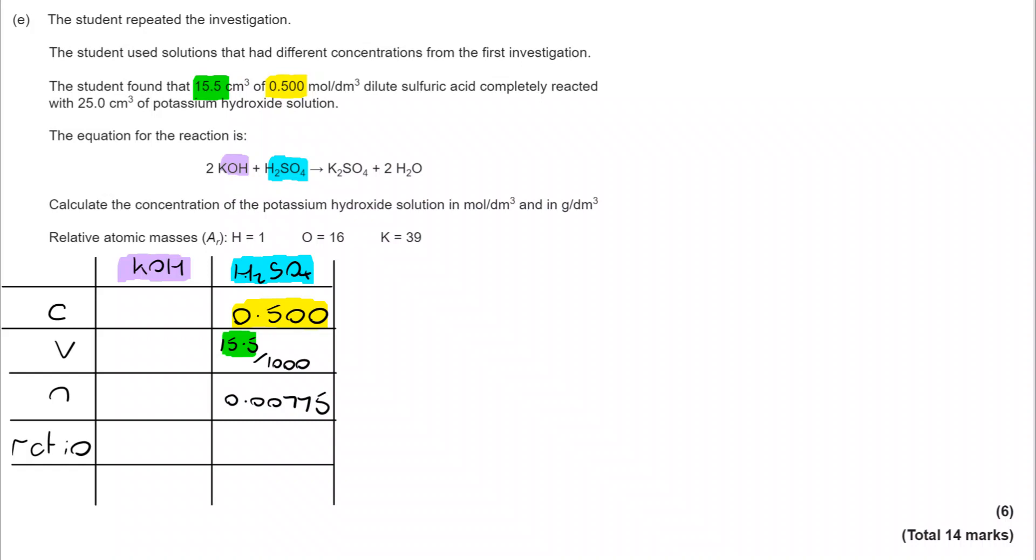And I'm going to use the equation to put the mole ratios in. Two moles of KOH react with one mole of H₂SO₄. So the ratio is two to one. And if I know the ratio is two to one, I can use that to find the actual moles of KOH. I'm going to double my 0.00775, and I get 0.0155.